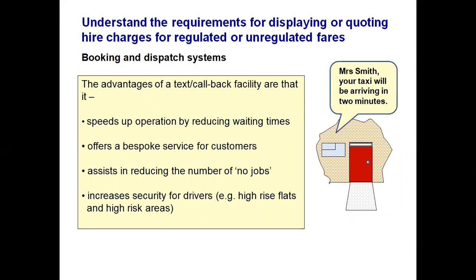Text and callback speeds up operations by reducing waiting times, with the nearest car sent and a bespoke service offered to customers. The customer receives a text saying the vehicle has been dispatched and another when it arrives. It reduces the number of no-jobs — where a driver cannot find the customer — since the message reaches the customer wherever they are. It also greatly increases security for drivers, particularly in risky areas with a history of robberies or muggings, such as high-rise flats, areas with subways, or locations with poor street lighting.